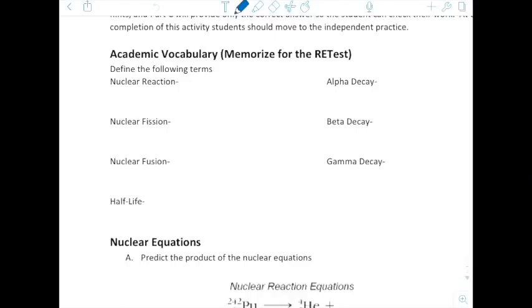Alpha decay occurs when an alpha particle, a helium nuclei or nucleus, is ejected from a large unstable nucleus. Beta decay occurs when a neutron is converted into a proton or electron beta particle and an antineutrino. Gamma decay occurs when a nucleus in a high energy state emits a gamma particle.